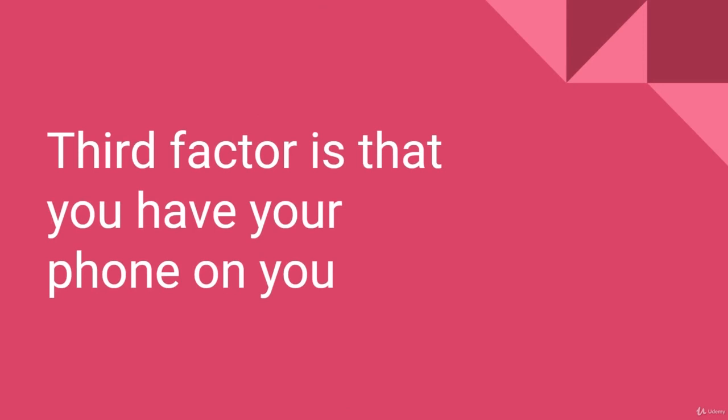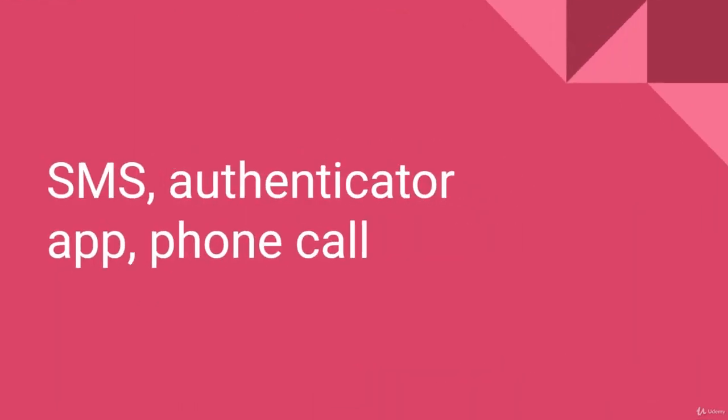The multi-factor part comes in with a third factor. In MFA, that third factor is typically your mobile phone — the fact that you have it proves it's you. If somebody far away has your user ID and password, they can sometimes log in, but they don't have your phone. If Azure sends you a text message, they won't receive it. That third factor operates separately from the internet. It could be an SMS text message, an authenticator app — Microsoft has one, Google has one, others provide them as well — or even a voice phone call where you receive a number to enter on the site. These are the different ways of enabling multi-factor authentication.